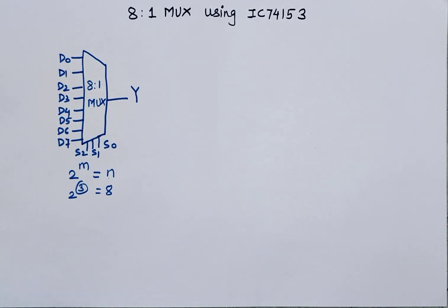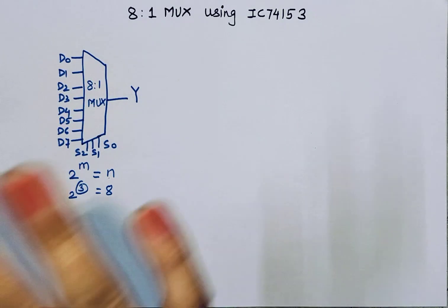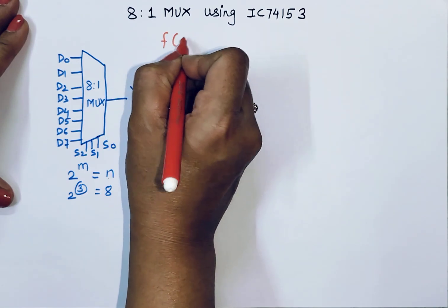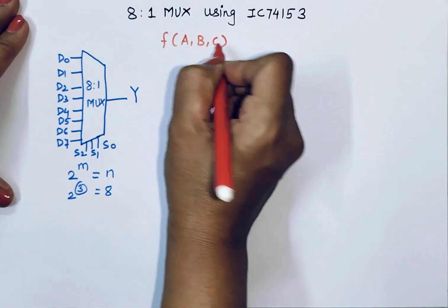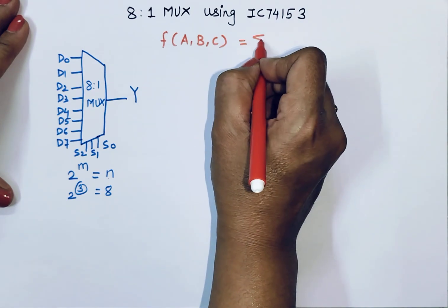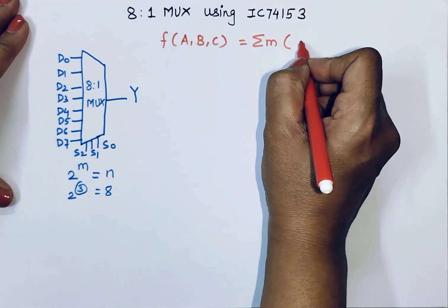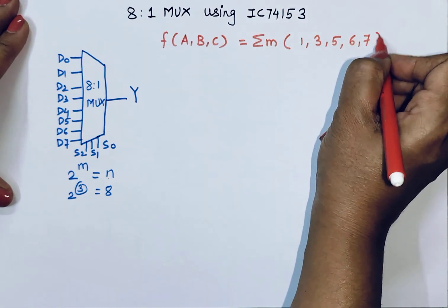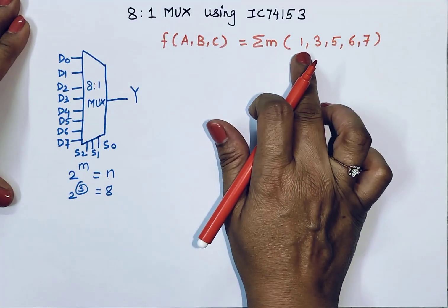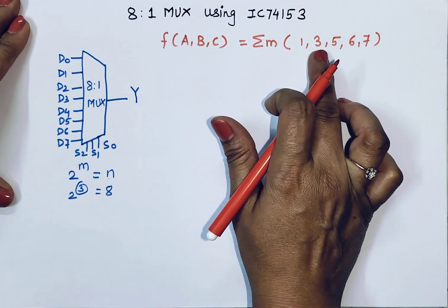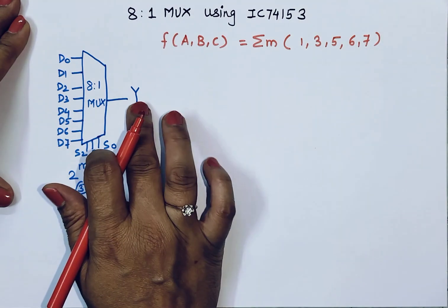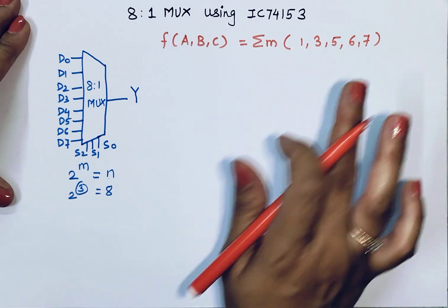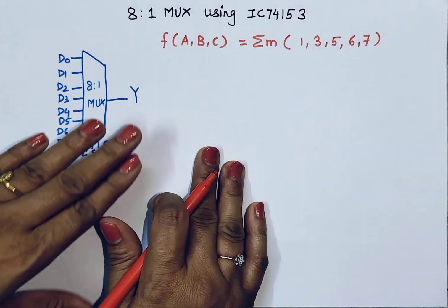For implementation of the 8-to-1 multiplexer, I'll take a simple 3-variable function F(A, B, C) = summation of minterms 1, 3, 5, 6, and 7. It means for these inputs — 1, 3, 5, 6, 7 — my output is 1, and for the remaining terms 0, 2, 4 the output is 0.